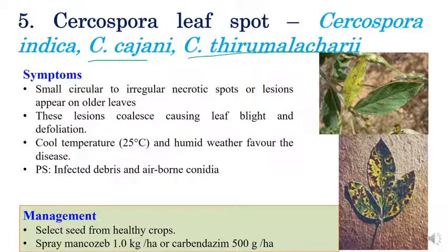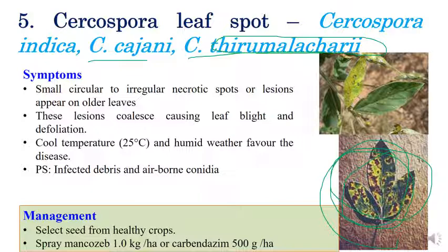Cercospora leaf spot is caused by Cercospora indica, Cercospora cajani, or Cercospora thurmulachari — Thurmulachari being a renowned scientist who developed antifungal antibiotics. Symptoms include irregular necrotic spots on the upper surface of leaves. Later, spots coalesce and cover the leaf completely, giving a blighting appearance. Small spots appear initially, then coalesce into severe blighting, along with defoliation and yellowing of leaves. Use good quality disease-free seeds and spray mancozeb at 1 kilogram per hectare or carbendazim at 500 grams per hectare.